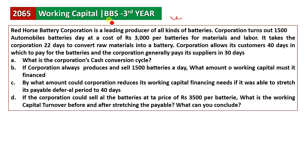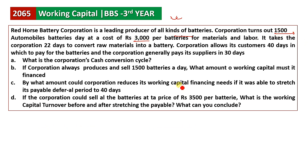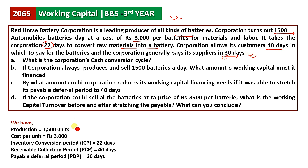Now, let's look at the Red Horse Battery Corporation example. The company produces and sells batteries. The product cost per unit is ₹3,000. The Inventory Conversion Period is 22 days, the Receivable Collection Period is 43 days, and the Payable Deferral Period is 30 days from suppliers.